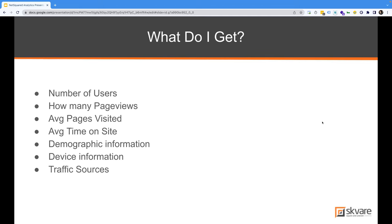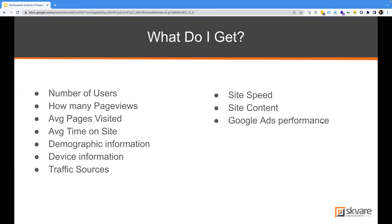We can also figure out where visitors are coming from. Maybe a lot of people are coming from Google search engines, or from social media — or maybe they're not coming from social media, which can tell you that you could beef up your social media campaigns to drive more traffic. We can also tell you how fast some of your pages are loading. Google likes pages loading between two to five seconds or so. This can tell you if certain pages are loading really slow, and there's a chance Google won't rank them as highly. It tells you which pages are performing better than others, how your ads are performing, and your social media impact — are your marketing efforts actually working?